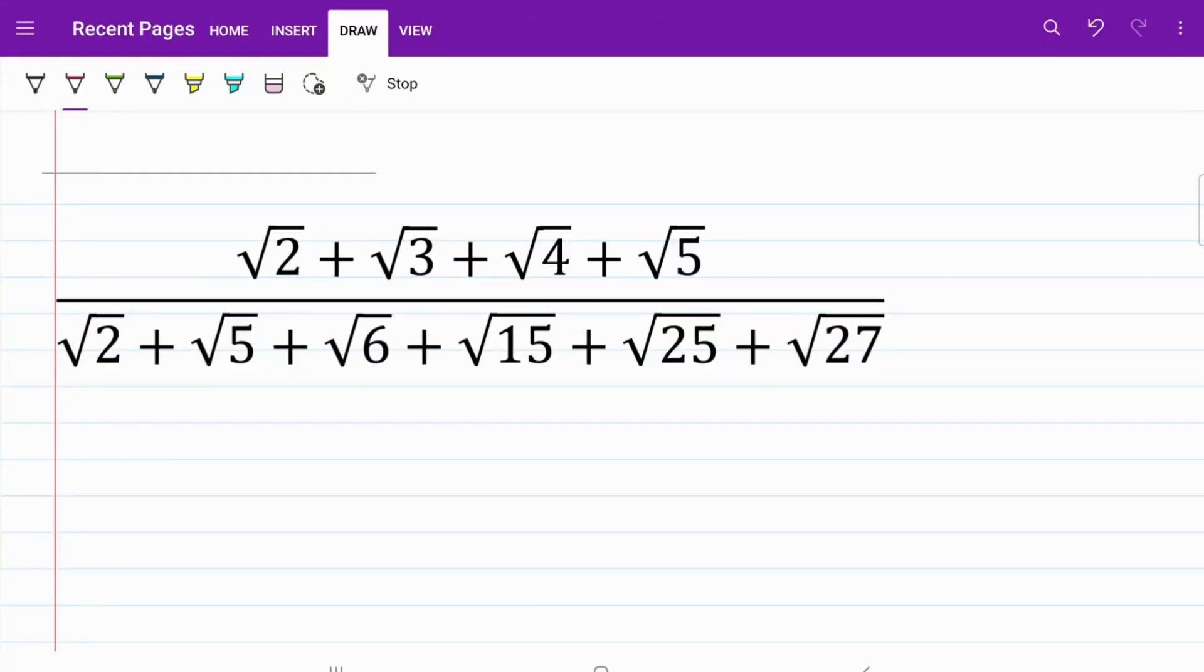Welcome back to the channel. For today's video, we're looking to simplify a fraction where both the numerator and the denominator are expressed in a series of numbers in radical form. It's a pretty straightforward question, so feel free to challenge yourself to try to solve it within 30 seconds. Let's go ahead and get started.